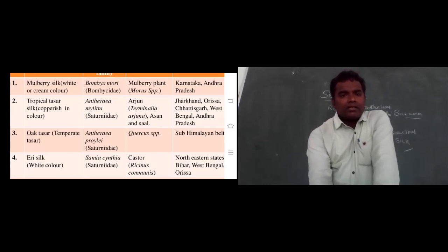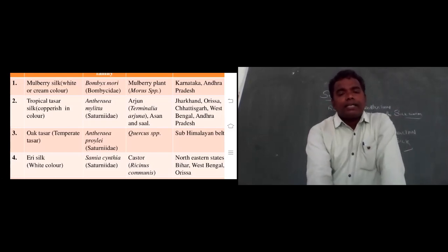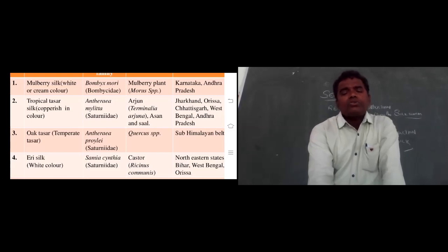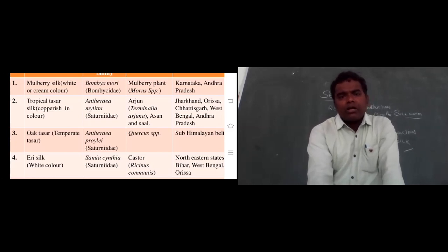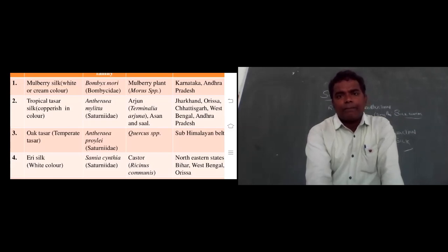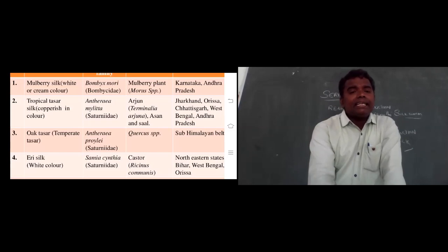Oak tassar silk, also called temperate tassar: scientific name is Antheraea pernyi, family Saturniidae. This silkworm eats oak (Quercus) leaves. Oak tassar silk is produced in the sub-Himalayan belt.